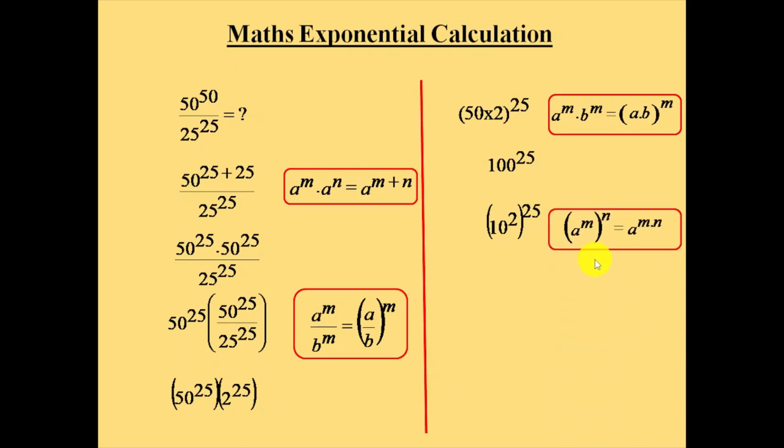We have the formula a power m whole power n is equal to a power m times n. Consider a equal to 10, m is equal to 2, n is equal to 25. So it will become 10 power 2 times 25, which is 10 power 50. This is our final answer. Thank you.